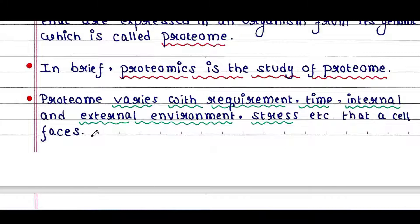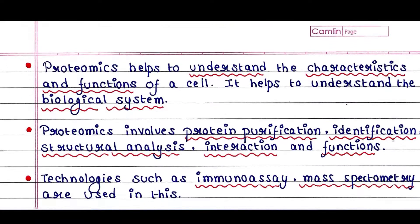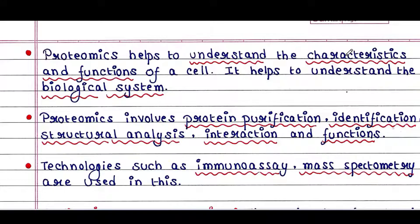Since different cells express different proteins, and it depends on these factors. Proteomics helps to understand the characteristics and functions of a cell and the biological system, since proteins ultimately control the function of a cell. Proteomics involves protein purification, identification, structural analysis, interaction and function. Technologies such as immunoassay and mass spectrometry are used in these.